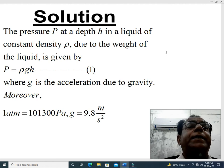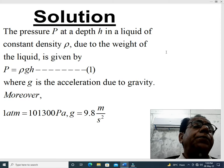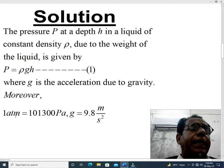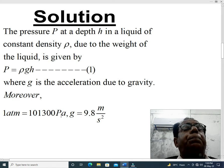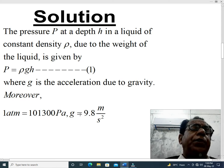H usually stands for height, but I have already said that depth and height are equivalent terms. The pressure P at a depth H in a liquid of constant density rho due to the weight of the liquid is given by P equal to rho G H, equation number 1, where G is the acceleration due to gravity. We know value of G that is 9.8 meter per second square. Moreover, 1 ATM that is 1 atmosphere is equal to 101300 Pascal, and acceleration due to gravity is 9.8 meter per second square.